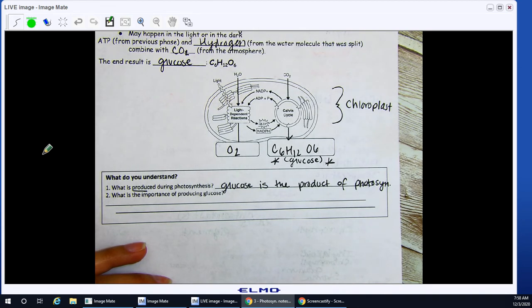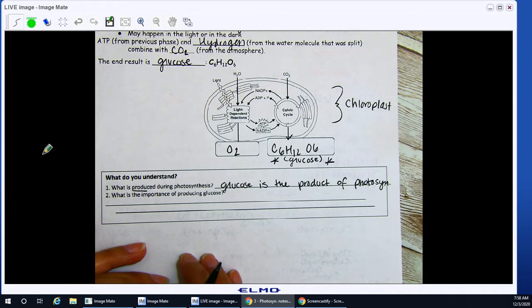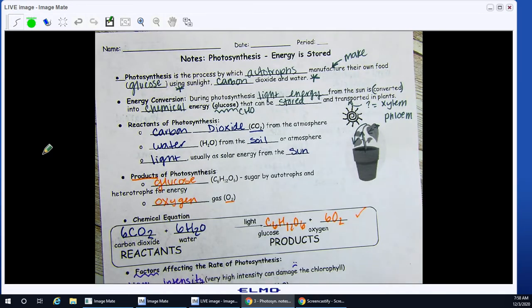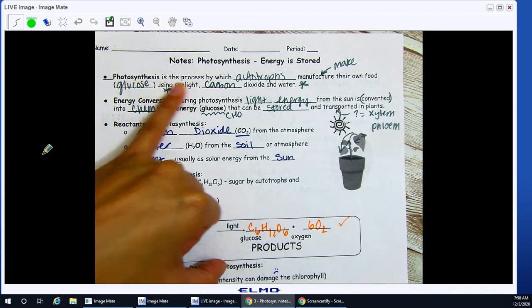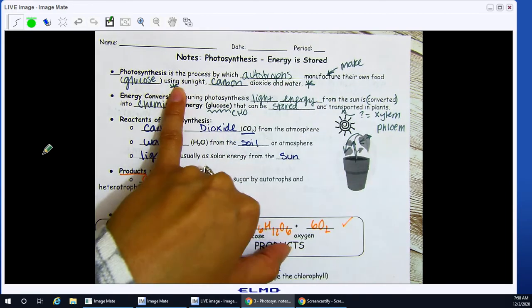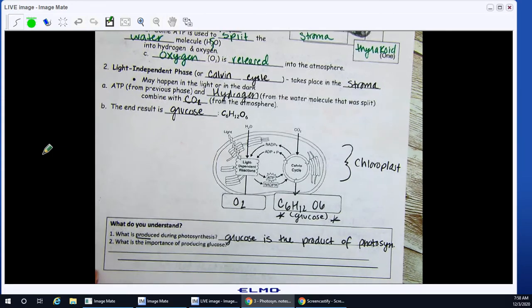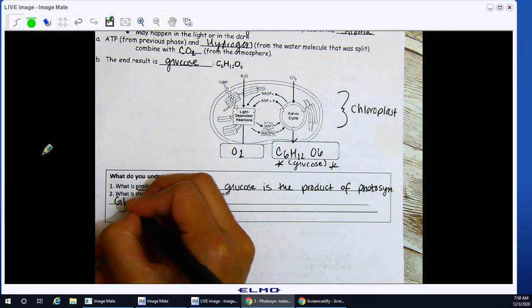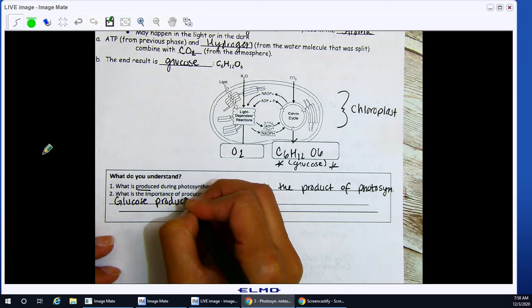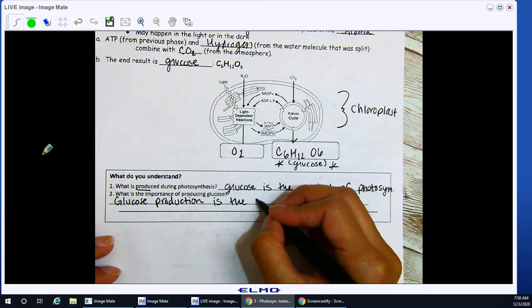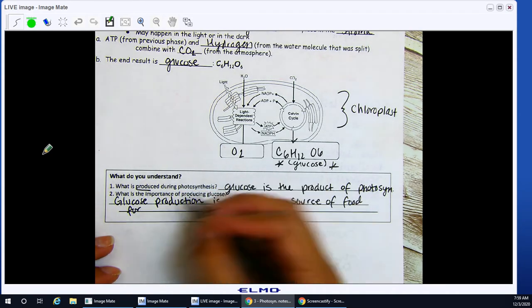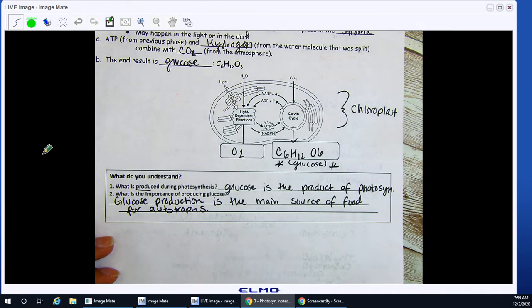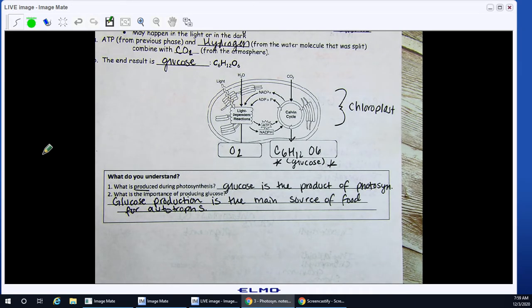Number two, what is the importance of producing glucose? So, why do I need to make glucose? If you're not sure why you would need to use photosynthesis and why do you need to get glucose, it says photosynthesis is the process by which autotrophs make their own food. So, this is their food source. What is the importance of producing glucose? Glucose production is the main source of food for autotrophs. So, without it, they would not be able to provide for themselves. They wouldn't be able to survive.